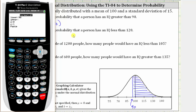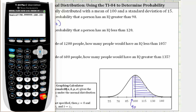Because we want all the area to the right, we have to exaggerate the right bound — something like 999999 works well. Enter. The mean is 100. Enter. The standard deviation is 15. Enter. Press enter again on paste. If you have an older TI-84, you may have to enter the information on the home screen as seen here. Now we press enter to four decimal places.